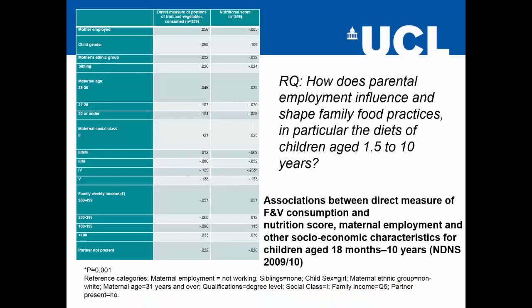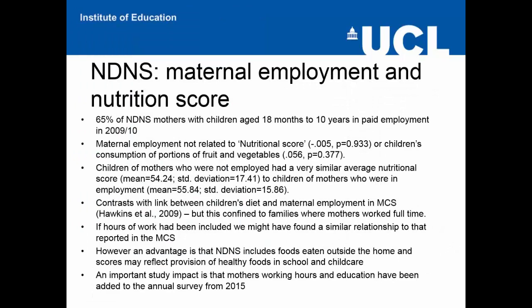Our first research question concerned how parental employment influences the diets of children. The nutritional score was used not only to sample children but also as an outcome variable for secondary analysis, including this question. The table shows regression coefficients showing associations between direct measures of fruit and vegetable consumption as well as the nutritional score, maternal employment, and other socioeconomic characteristics.